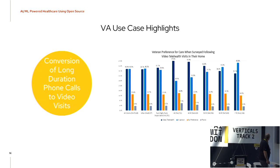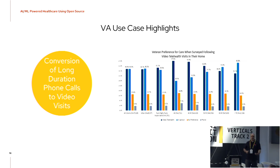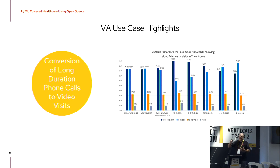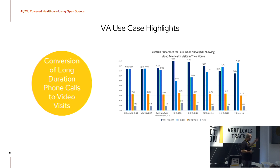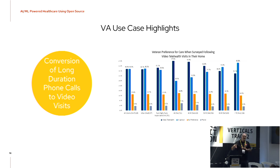Another VA project is the conversion from long phone calls to video consultations. Because the US is huge, they do a lot of consultations by phone. But they detected a trend: the longer the phone call, there's a good chance that the patient should see someone in person. By analyzing the conversation in phone calls, analyzing the length paired with patient data, they are trying to early-detect which patients should directly go to a video interview instead of calling and spending long hours on those phone calls.